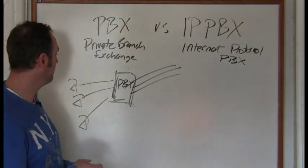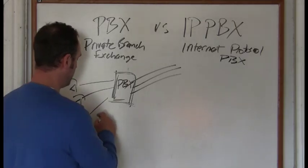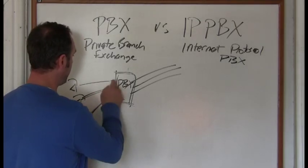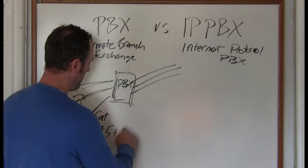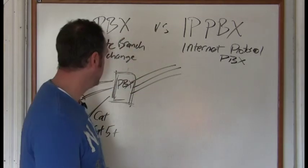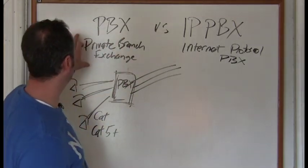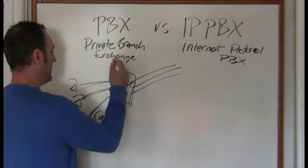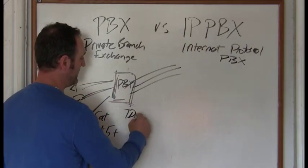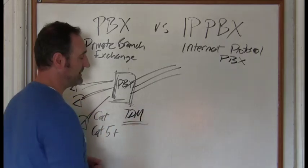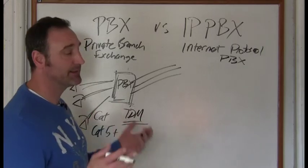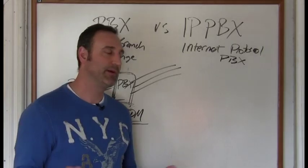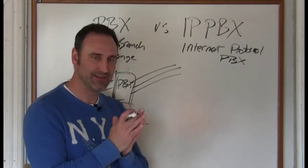This wiring can be Cat 3 wiring. These days, if it's new wiring, it's probably going to be Cat 5 or better. Now the difference - I'll throw another term out at you - it's going to be based on TDM signaling, Time Digital Multiplex signaling. What does that mean? It's just digital signaling. I'm going to keep it simple for you.